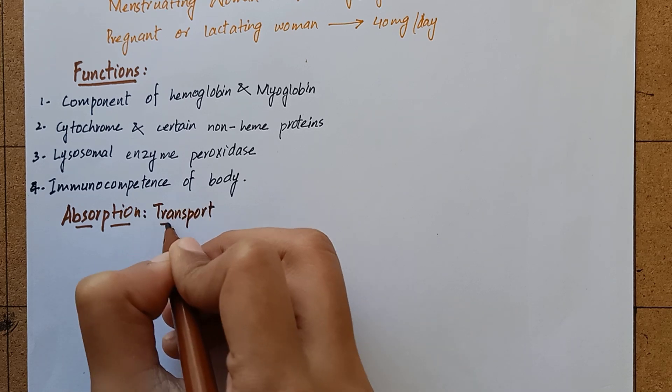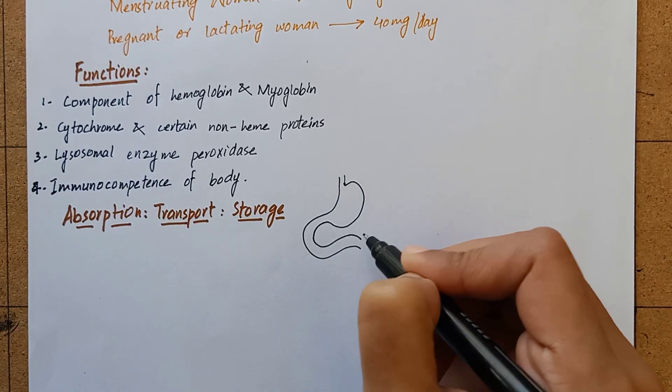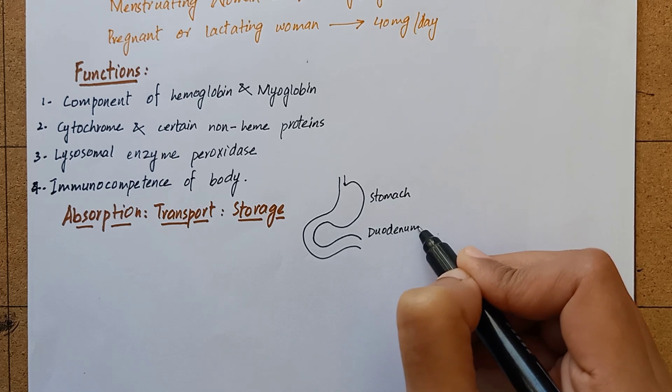Now let's have a look at the absorption, transport and storage of iron. Iron is mainly absorbed in stomach and duodenum.